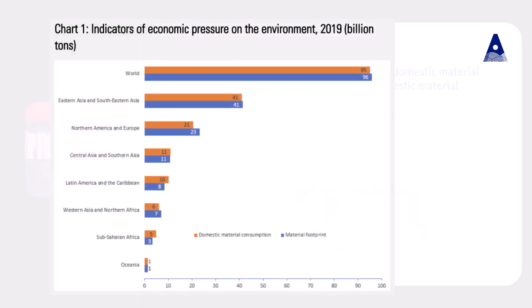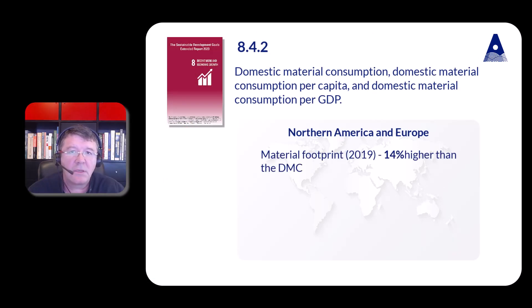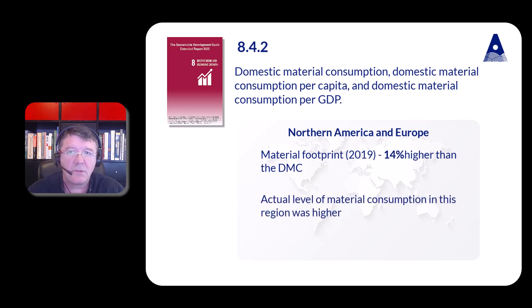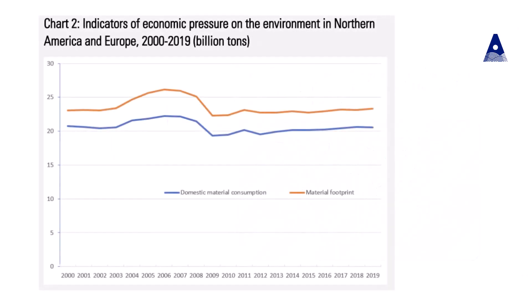Although the volumes of both indicators are quite close at the global level, the situation is rather different from region to region, as indicated in chart 1. In Northern America and Europe, the material footprint in 2019 was about 14% higher than the DMC, which indicates that the actual level of material consumption in this region was higher than it seems at first glance. Looking at these two indicators from 2000 to 2019, the difference between them never fell below 11%, and between 2005 and 2008 it was more than 17%.